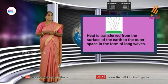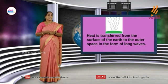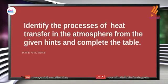This is the picture of Terrestrial Radiation. Heat is transferred from the surface of the Earth to the outer space in the form of long waves. Insolation is short waves; terrestrial radiation is long waves. This is the transfer of heat through the atmosphere.